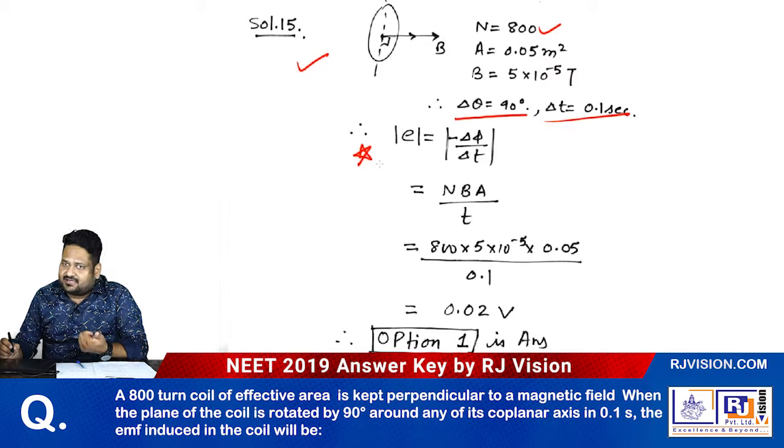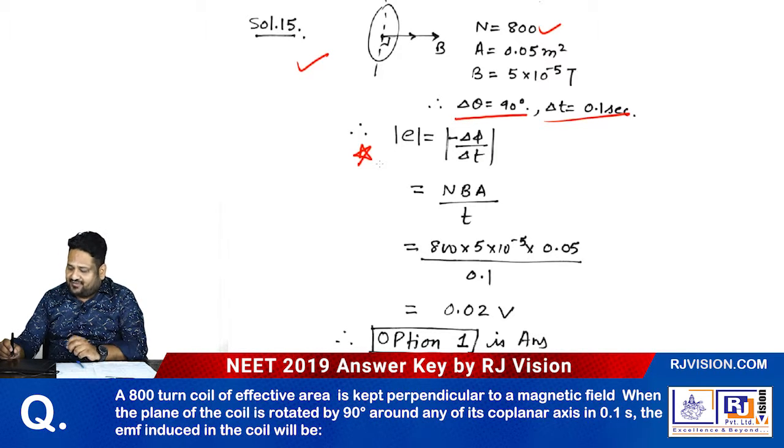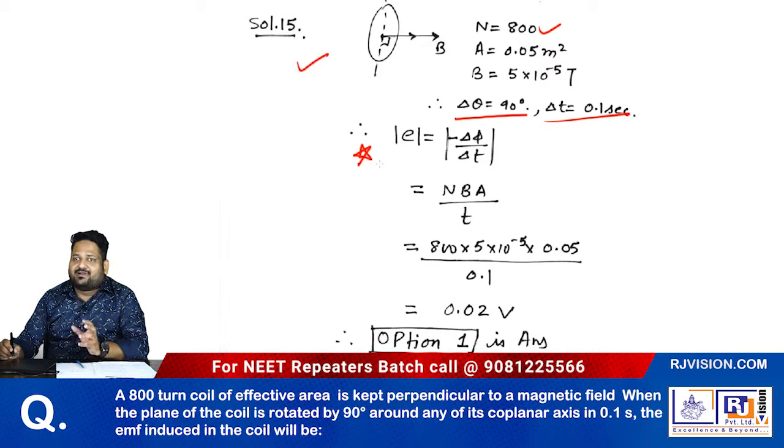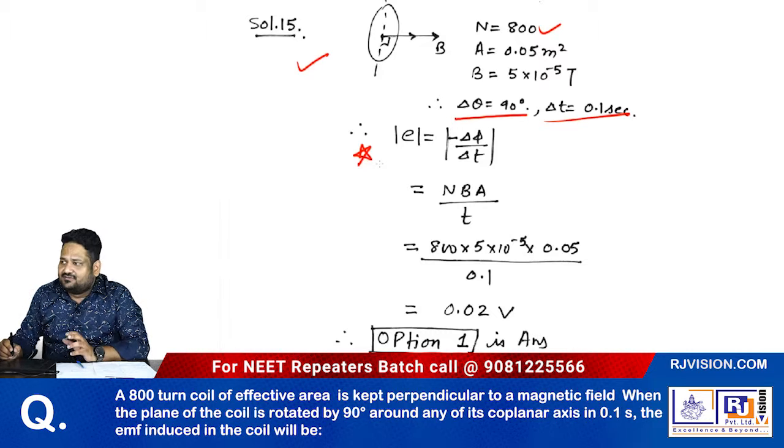The time is 0.1 seconds. Now according to the theory, E is equal to minus dφ/dt, and the magnitude of induced EMF is equal to the modulus of this value.